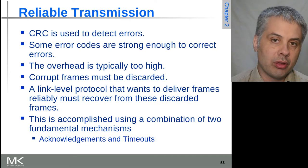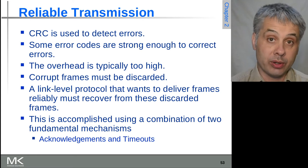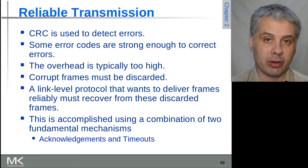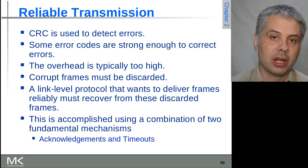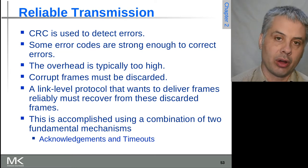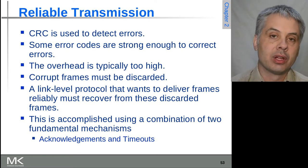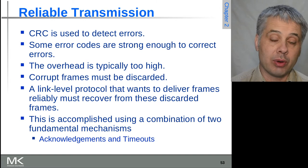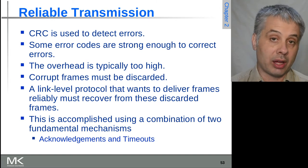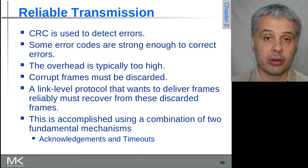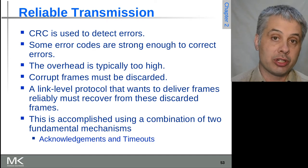However, typically unless you're using a link where the errors are so frequent that you'll need to correct errors in almost every frame, these are generally not worth the overhead. It's usually much cheaper and more bandwidth efficient in the long run to simply include a CRC or similar that can detect errors so that you can request retransmission.